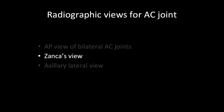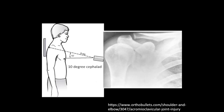The Zanca view is more specific for the AC joint. In this view the X-ray beam is directed 10 degrees cephalad, resulting in a picture where the AC joint is seen well in profile and is not overlapped by the spine of the scapula or any other osseous structures.